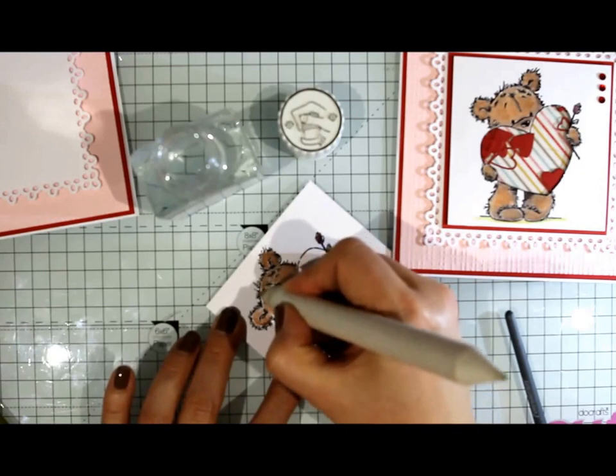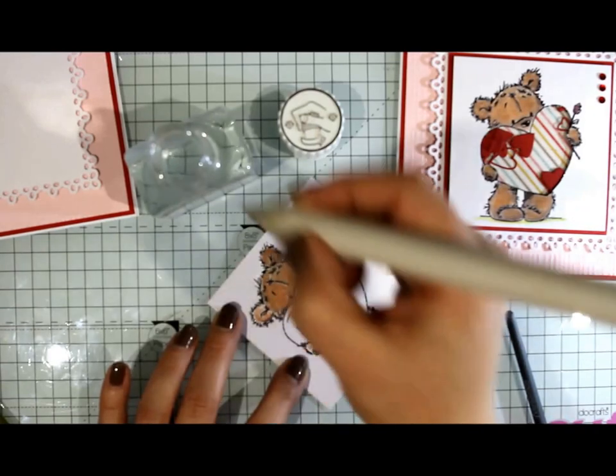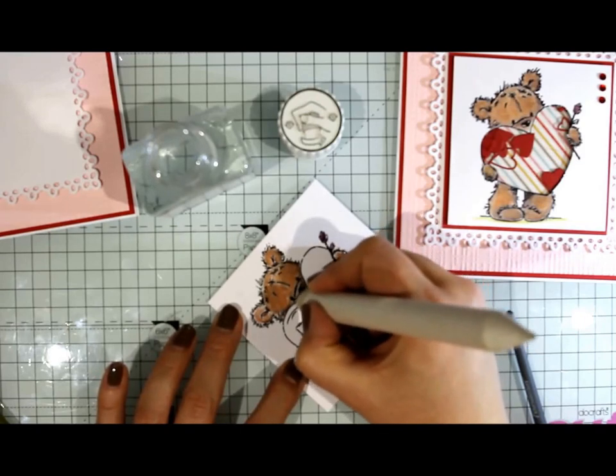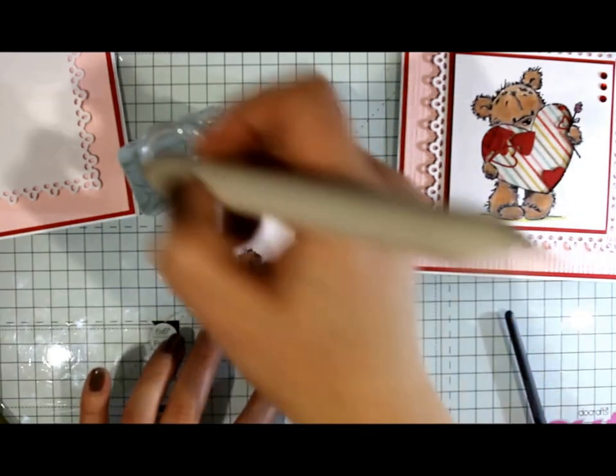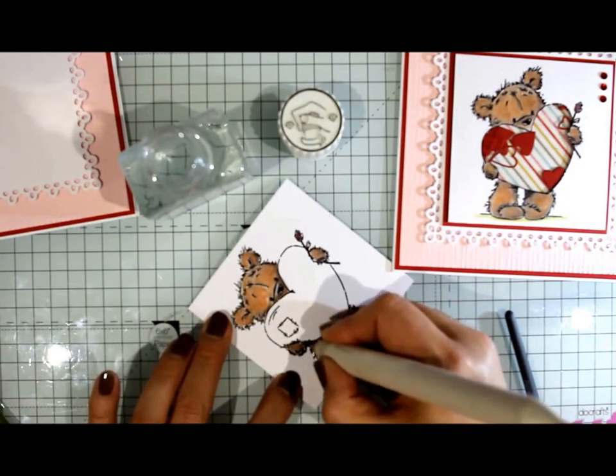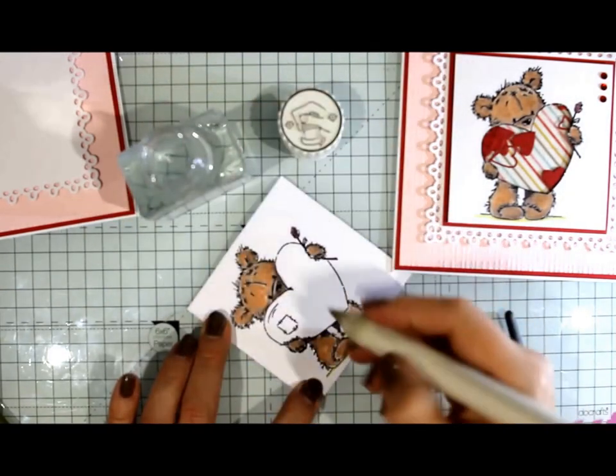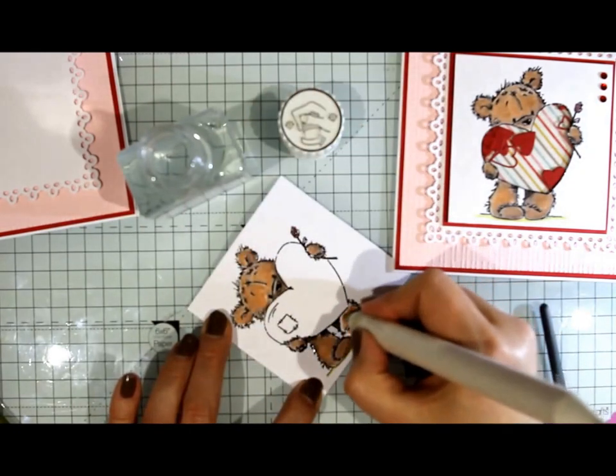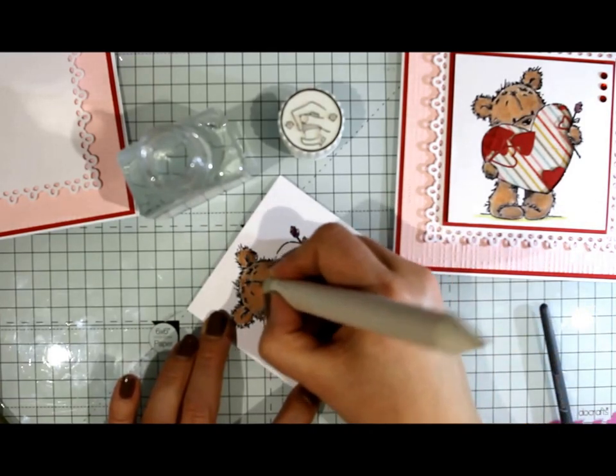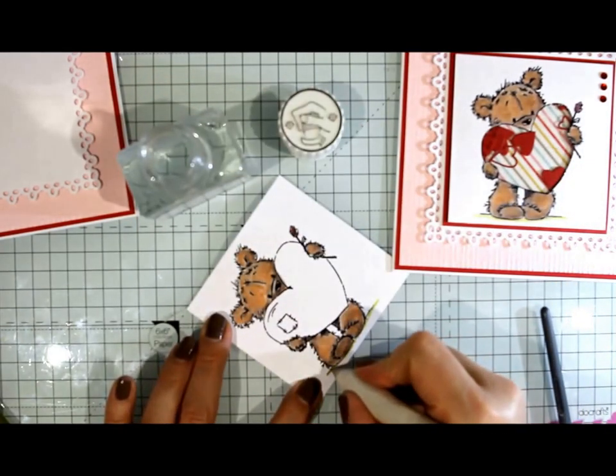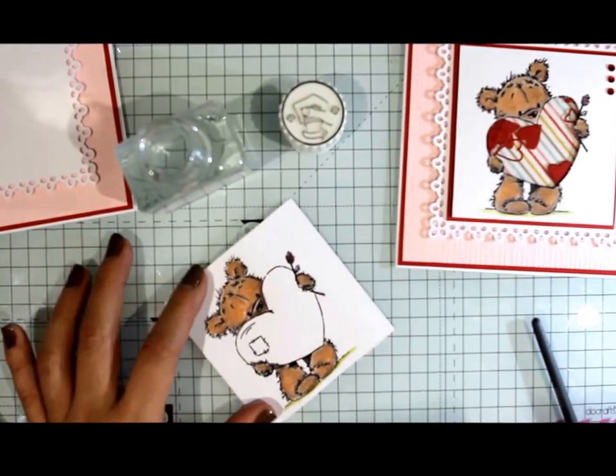So to blend that out we're using the Sanzador liquid. I've got a big blending stump here. And as you can see, it blends really easily. Just blend that grass out a little bit and a tiny bit of blending on the rose and that's good enough for me.